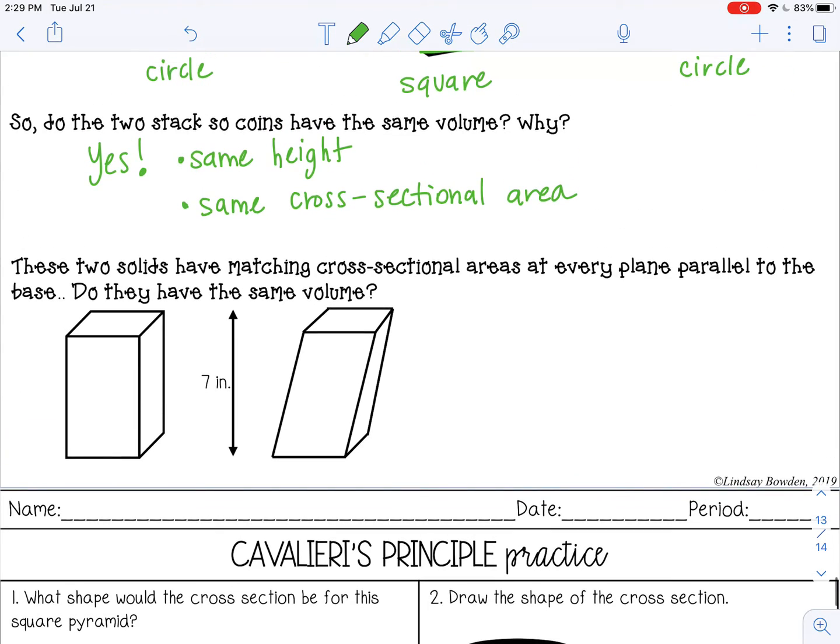Okay, so let's look at this example. So these two solids have matching cross-sectional areas, which means if I sliced here and I sliced here, they would be the same area at every plane parallel to the base. Do they have the same volume?